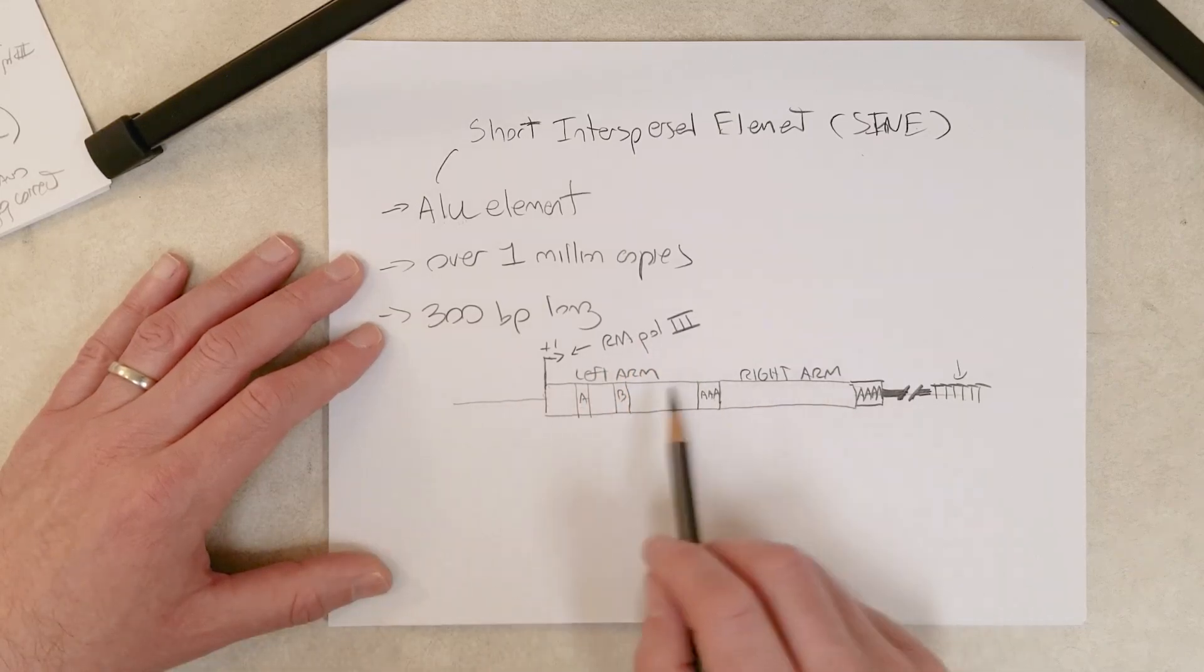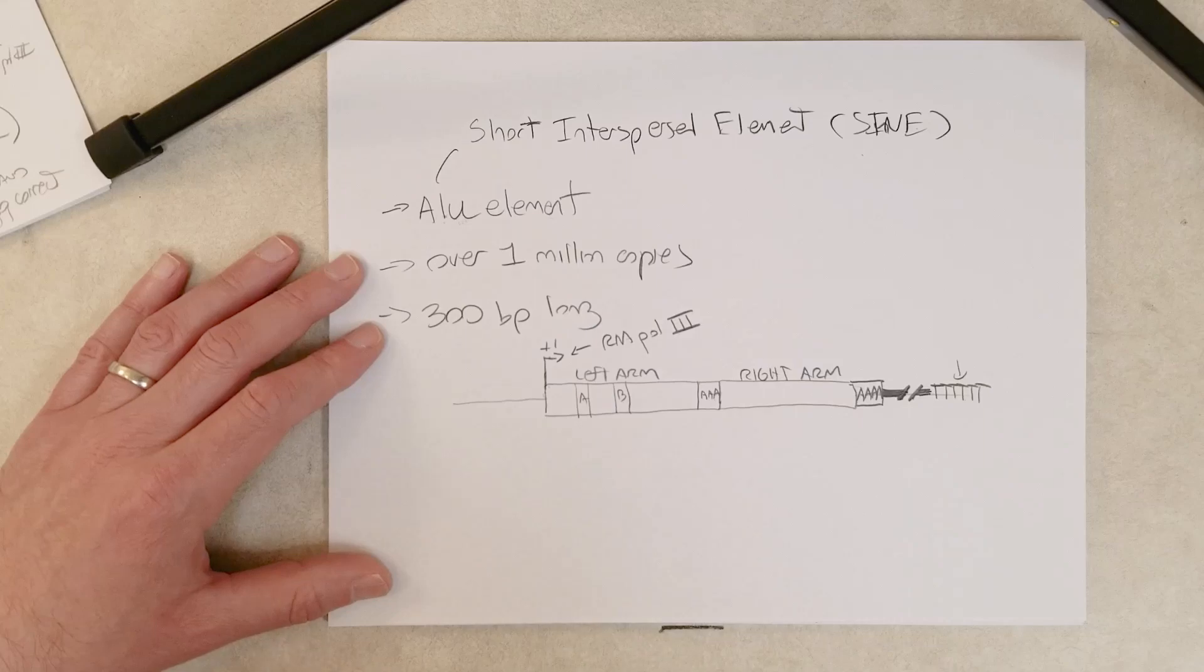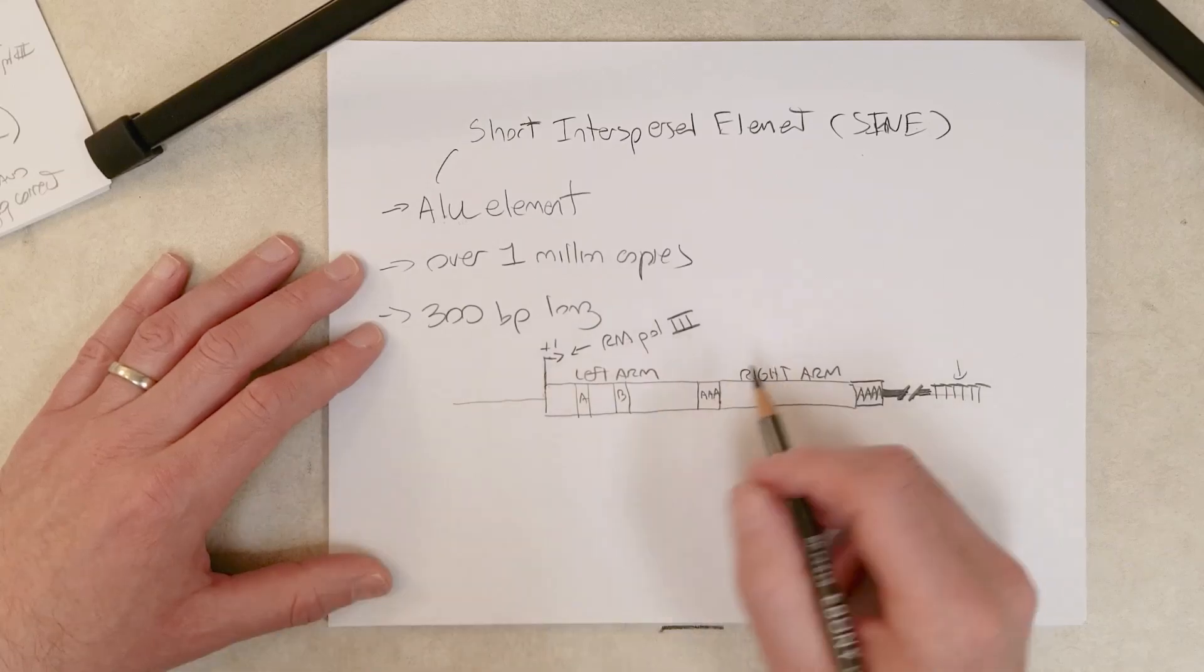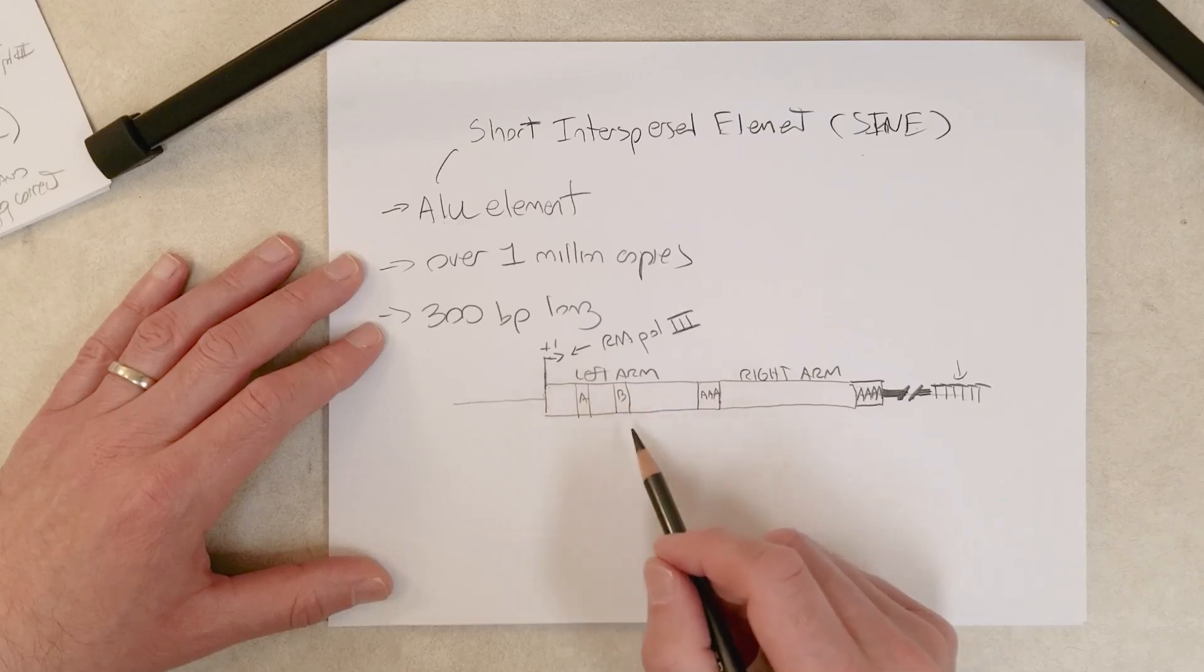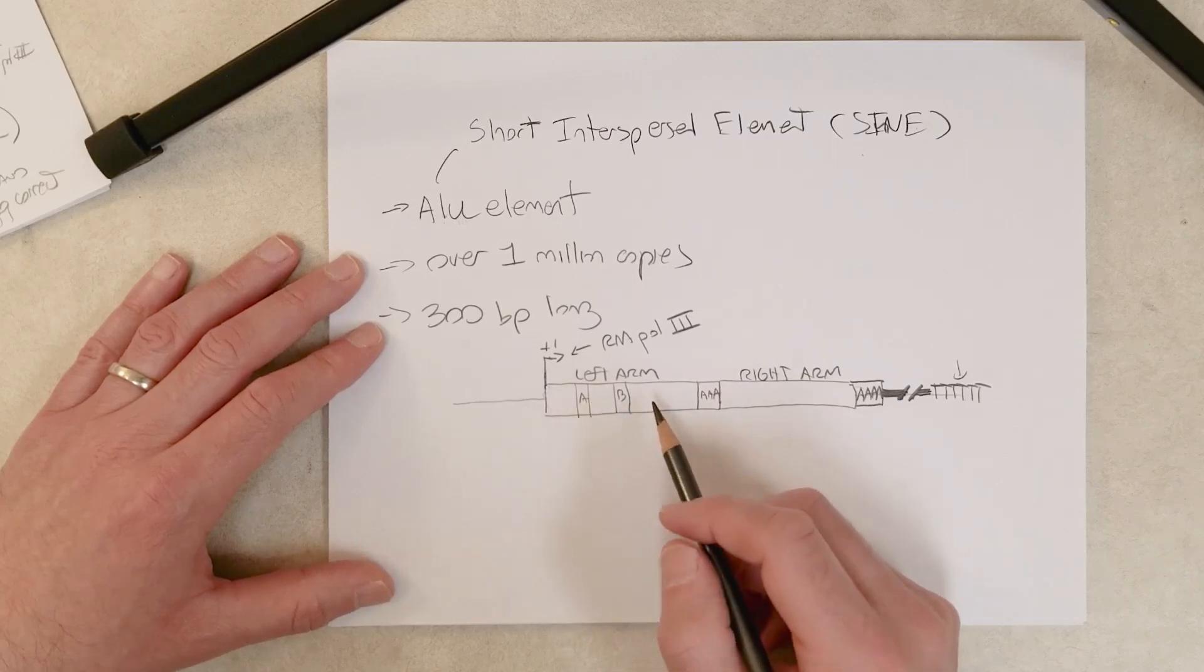This element is transcribed by RNA polymerase three into a non-coding RNA. It doesn't code its own proteins, it doesn't encode its own proteins.